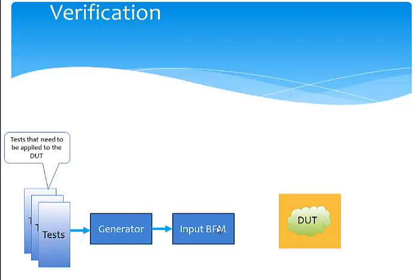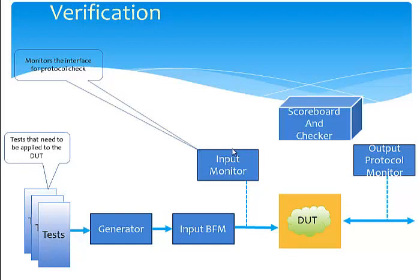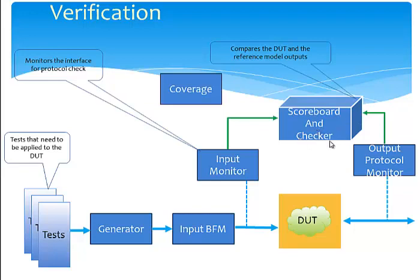The input BFM is a component in our verification environment that actually drives the input stimulus into our DUT. We can have two monitors: the input monitor and the output monitor. The input monitor collects the input stimulus given to the DUT and the output monitor collects the response from the DUT. Both the input packet and the output response packet are given to the scoreboard. In the scoreboard we give the input stimulus to our golden reference model, get the expected output response, and compare it with the actual response from the DUT. This is called the data integrity check. We can also have a protocol check and coverage done on our input stimulus.